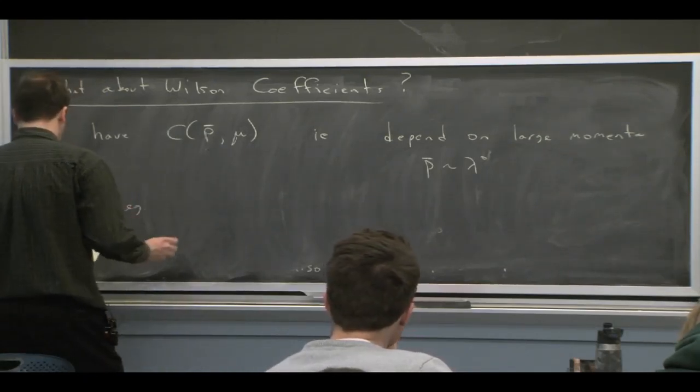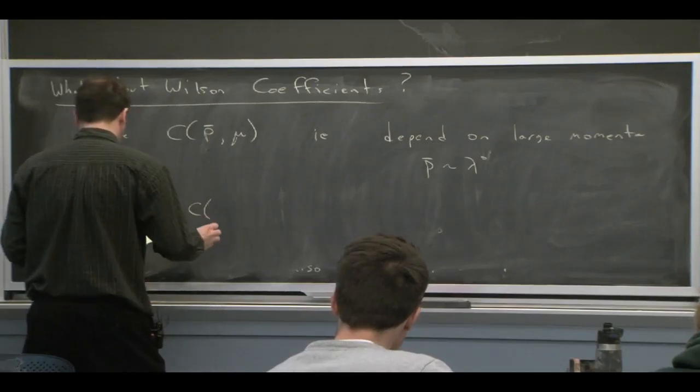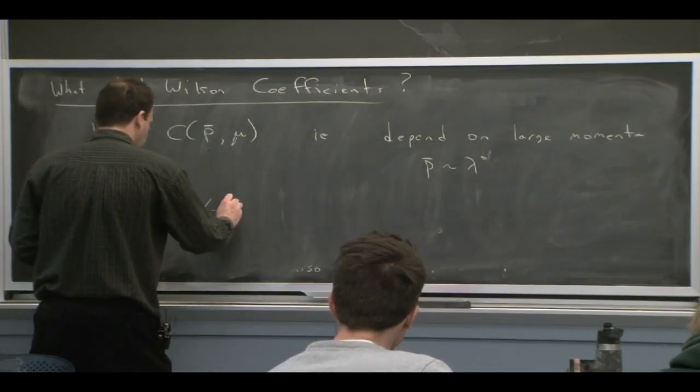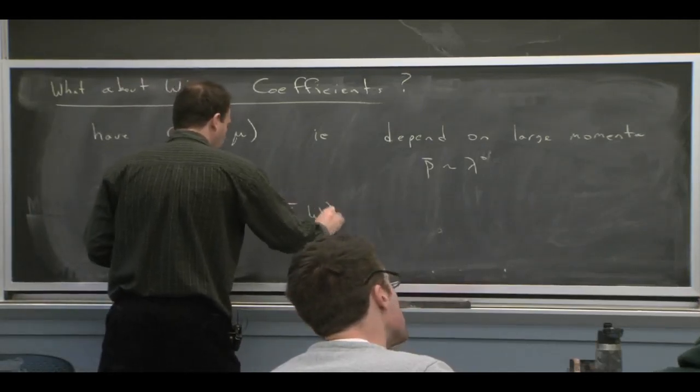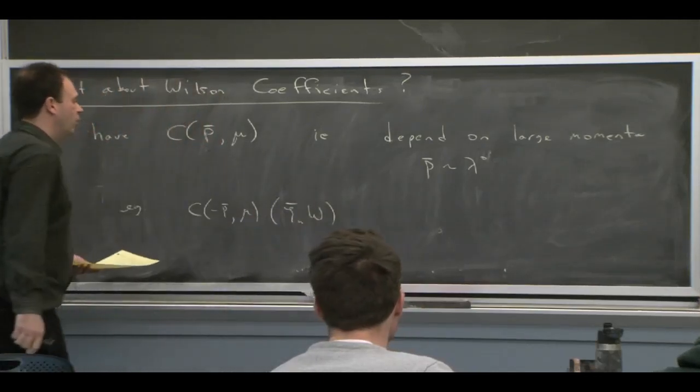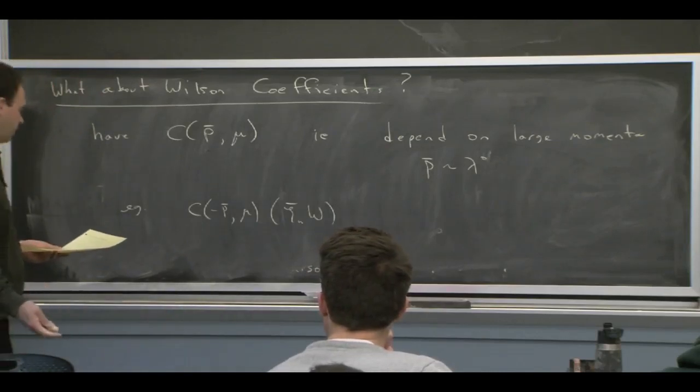So the way that we should set it up is to have an operator. Here's the kind of notation that's sometimes used, where the operator acts on both fields, the c bar and the w.